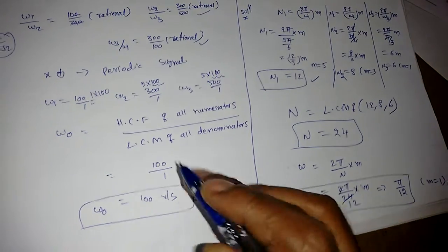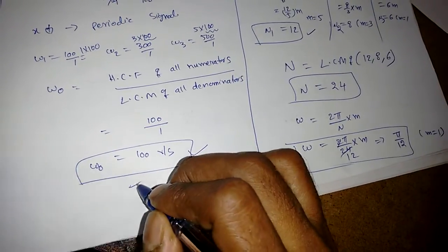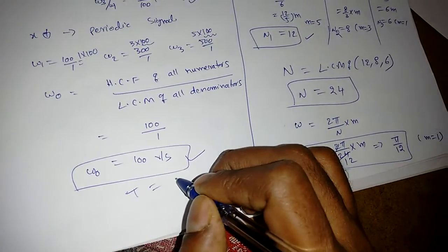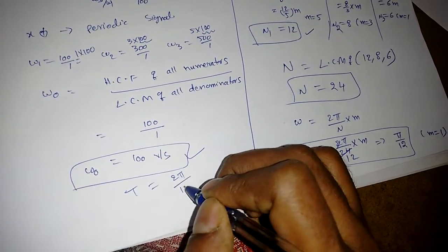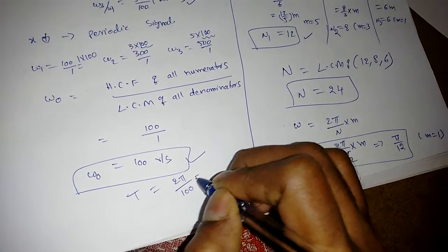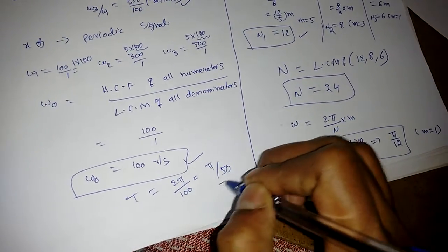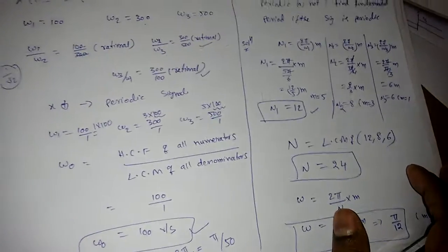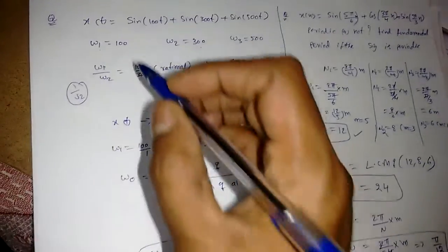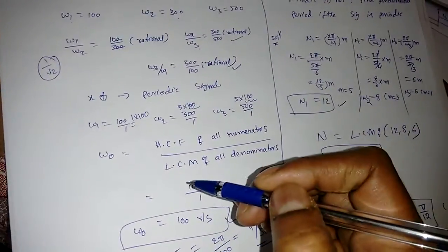The LCM of all denominators is 1 (since the only denominator is 1), so the fundamental frequency ω₀ = 100 radians per second. If they ask for the time period T, it is 2π/100 = π/50. The same procedure applies when two signals are given.